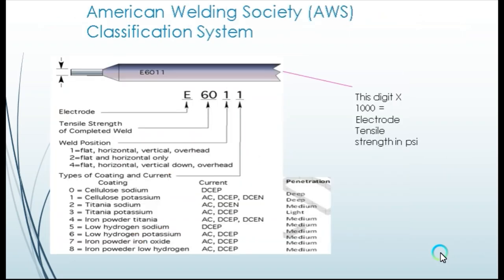Now let's understand the electrode classification system. By knowing it, we can identify properties of the welding electrode such as tensile strength, type of coating, welding position, type of current, and penetration profile. In this example, the E6011 electrode is shown. E stands for electrode. The next two digits — 60 — represent the strength in KSI. The next digit, 1, means the electrode can be used in all positions. The last digit tells us the type of coating and type of welding current.